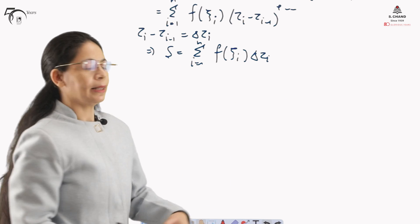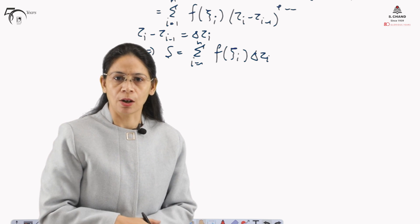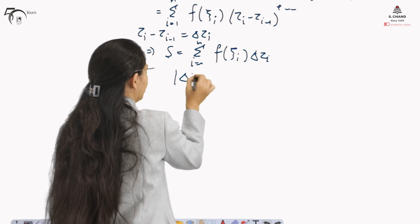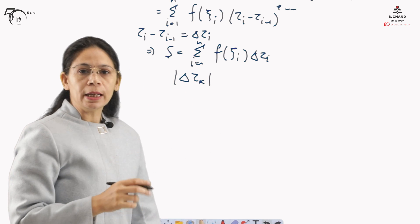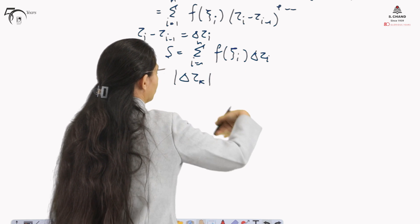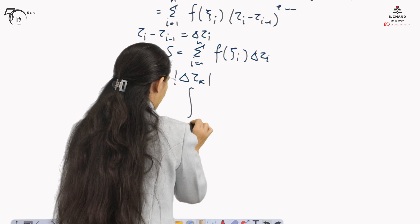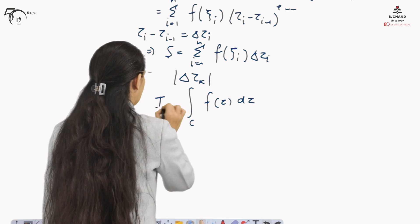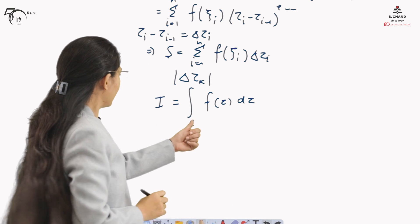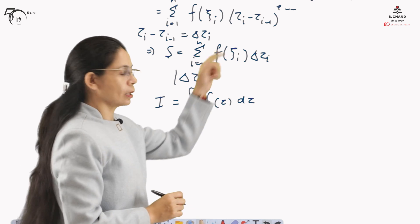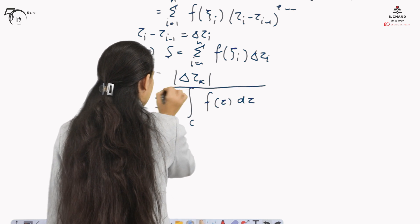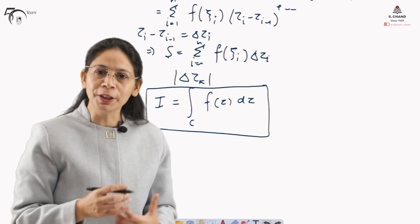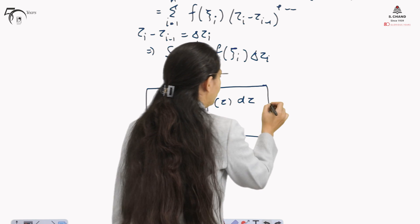If f(z) is continuous and the largest arc Δz_k tends to 0, then this summation can be converted into an integration. It becomes the integral over C of f(z) dz, represented by I. This is called the integration of f(z) over C, taken in the positive direction — that is, the counterclockwise direction. Such an integration is called a contour integral in complex analysis.